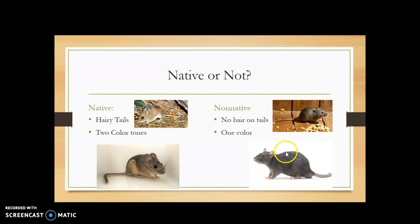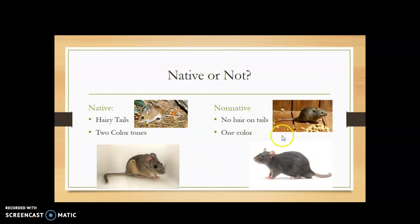Our Norway rat is global — it's a commensal with humans, so it will be anywhere humans are. We're not really going to focus on these non-native species. They're not on your list, so let's focus on the natives.